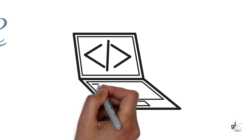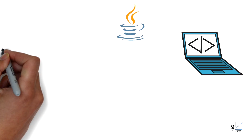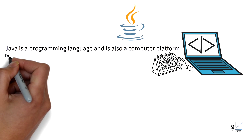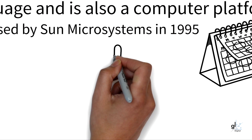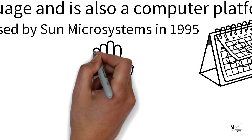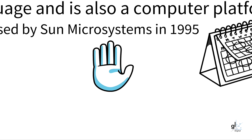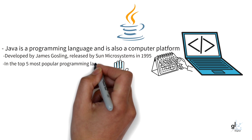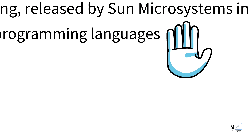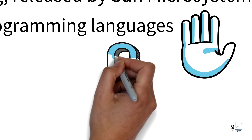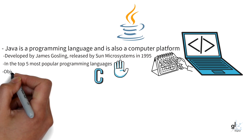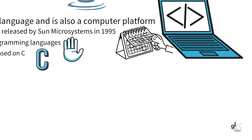Let's look at an overview of Java. Java is a programming language and is also a computer platform. Java was originally developed and designed by James Gosling, a Canadian computer scientist. It was first released in 1995 by Sun Microsystems. Java has consistently been rated as one of the top five most popular programming languages in the world. It is an object-oriented programming language and its syntax is based on C and C++. The Java platform contains an execution engine, a compiler, and a collection of libraries.